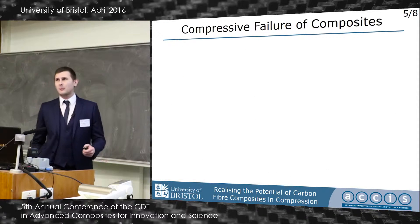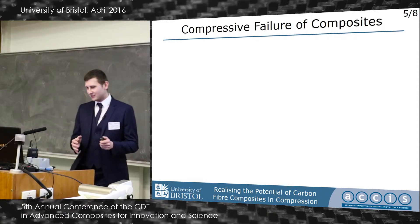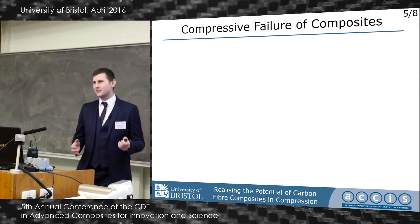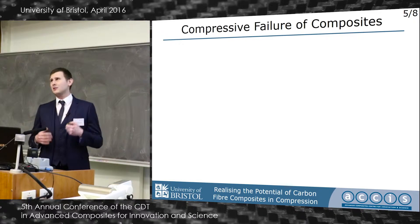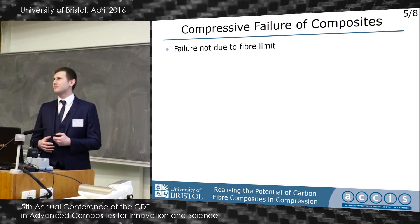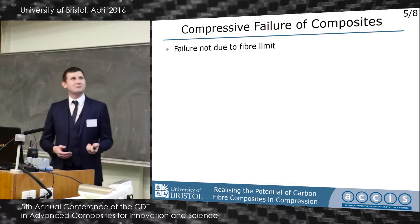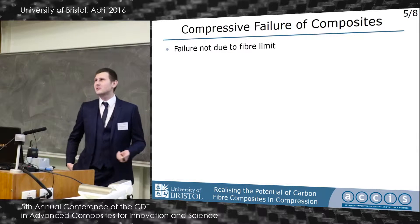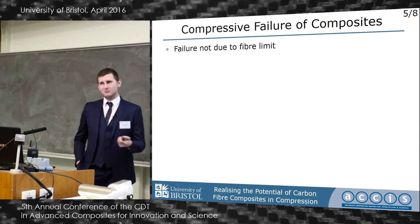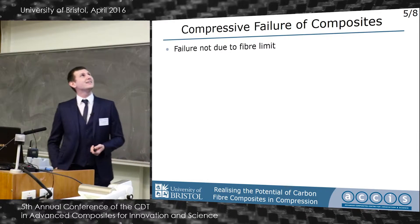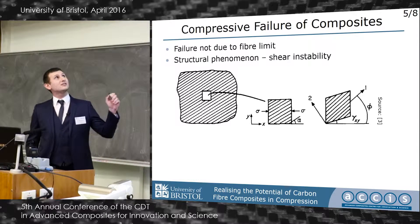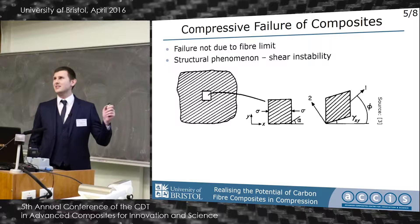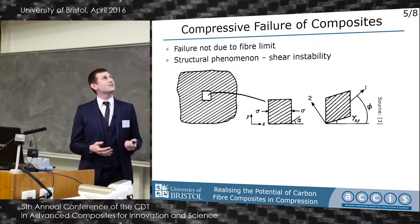So why do our composites fail at 1.2% when the strain to failure is 15% for the fiber? Clearly, it's not a fiber property. And our matrices are typically around 10% strain, probably higher. So it's a structural phenomenon — a structural phenomenon called shear instability.